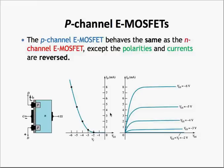A P-channel enhancement MOSFET operates and behaves exactly like the N-channel MOSFET we have discussed, except that polarities and currents are reversed. The threshold voltage of a P-channel MOSFET is negative, whereas that of the N-channel E-MOSFET is positive, and the applied gate voltages are all negative.